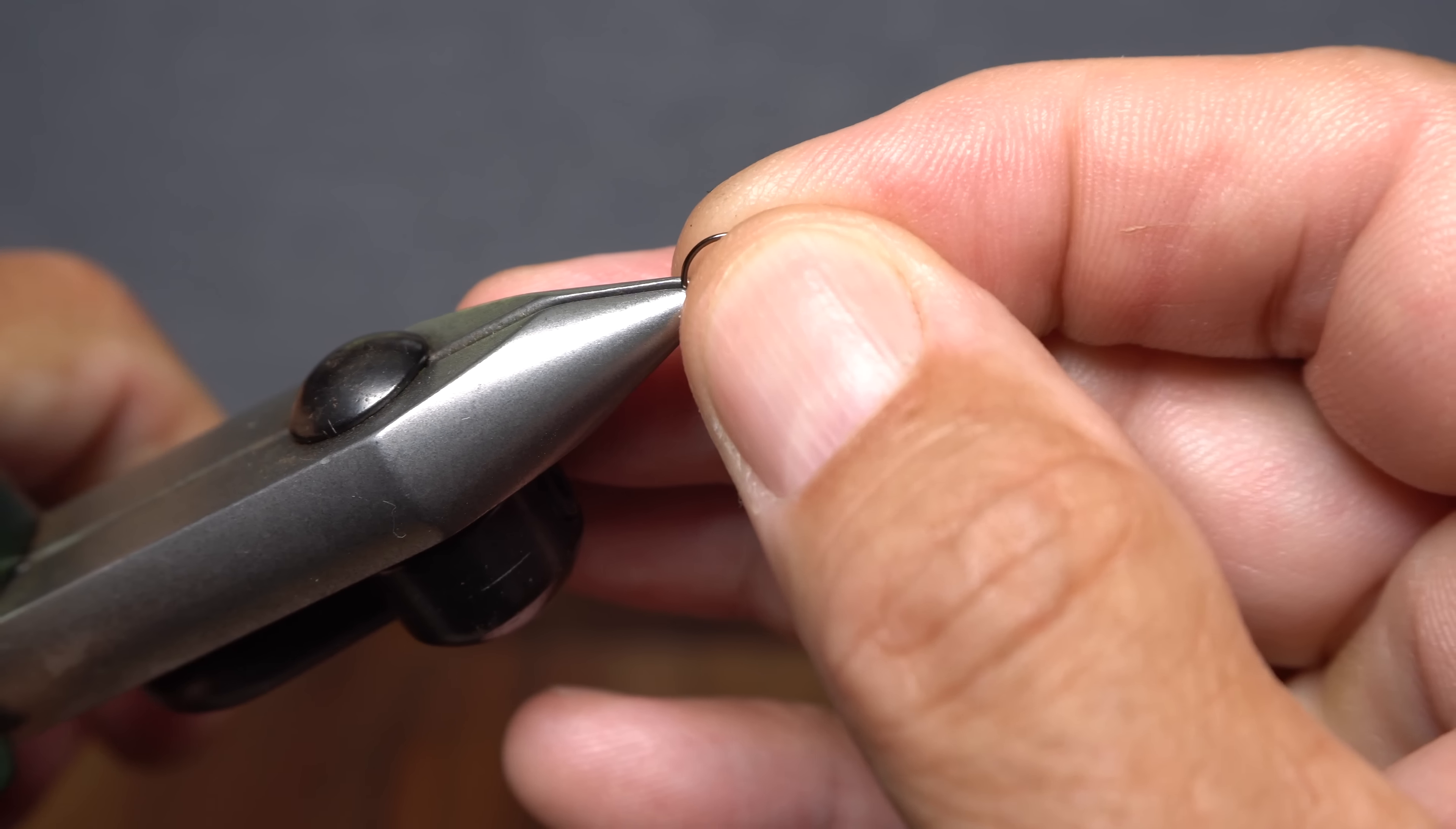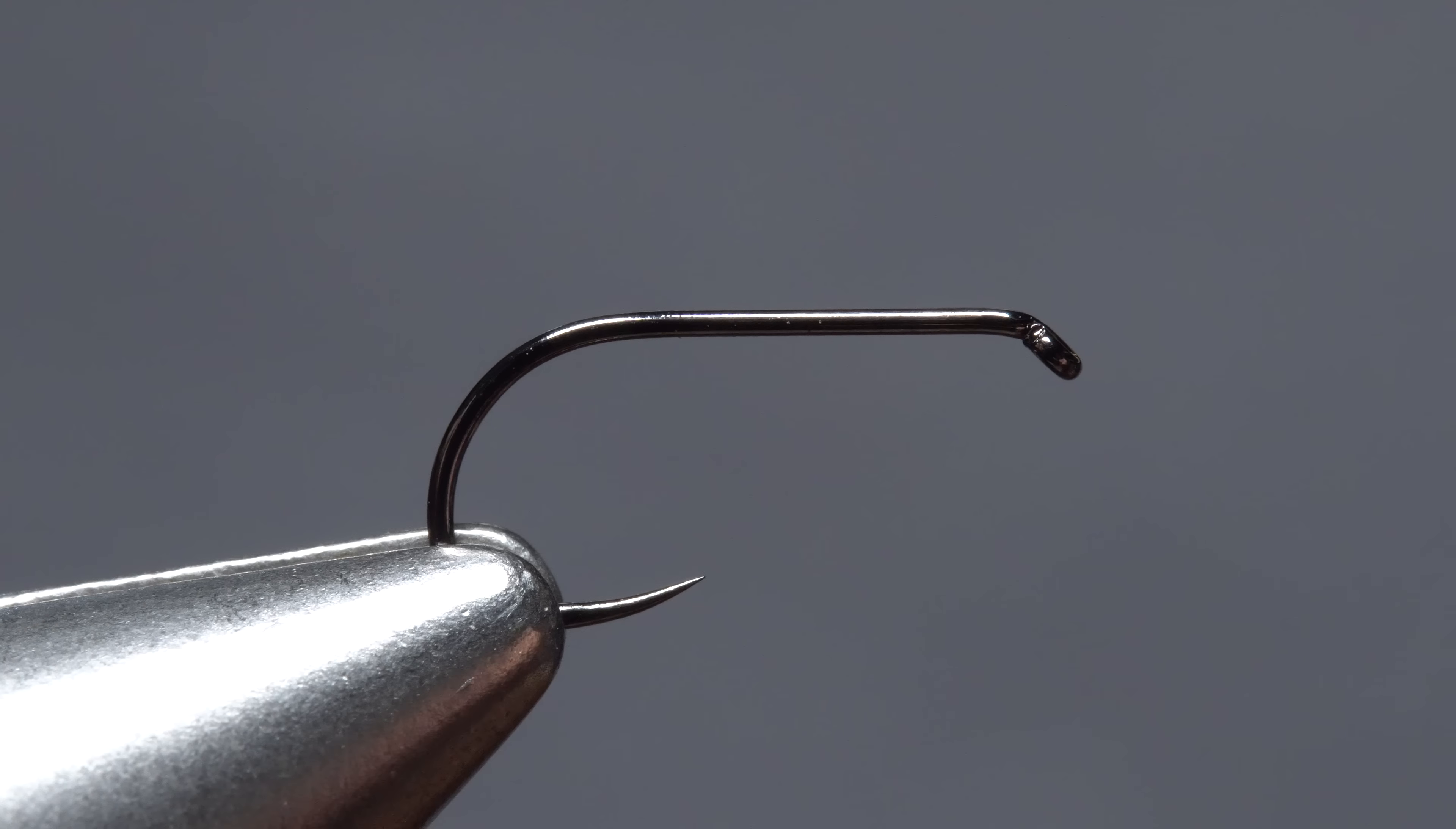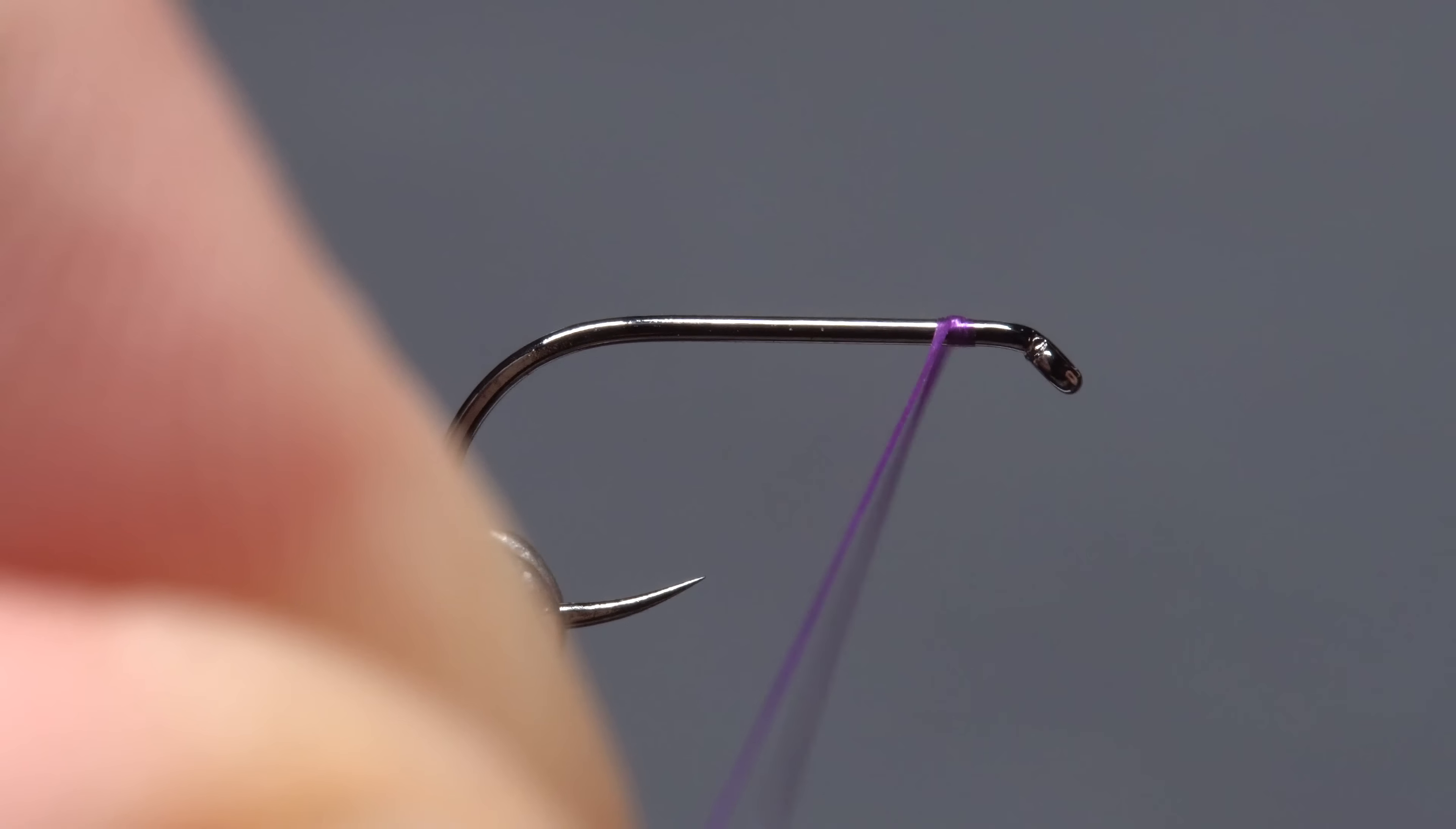After getting the hook firmly secured in the jaws of my tying vise, I load a bobbin with a spool of UTC 70 denier in purple. Get the thread started on the hook shank, leaving an eye length space behind the eye, and take a few wraps rearward before snipping off the excess tag.